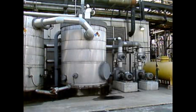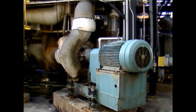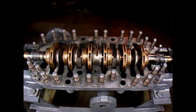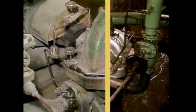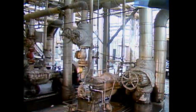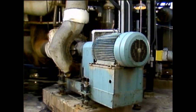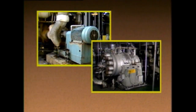Plants use many types of pumps to move process liquids. One of the most common types in use today is the centrifugal pump. A centrifugal pump uses one or more impellers to create a centrifugal force that pushes the process liquid through the pump. While there are a number of different types, they can be grouped into two basic categories: single-stage pumps and multi-stage pumps.